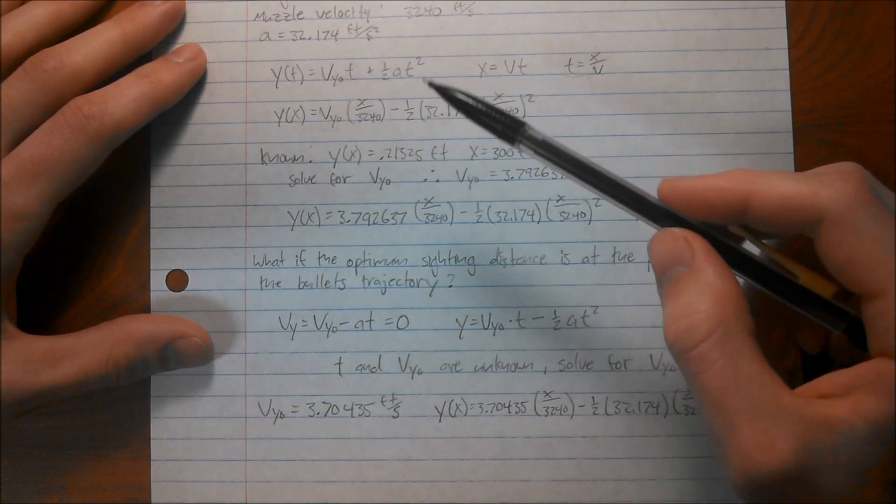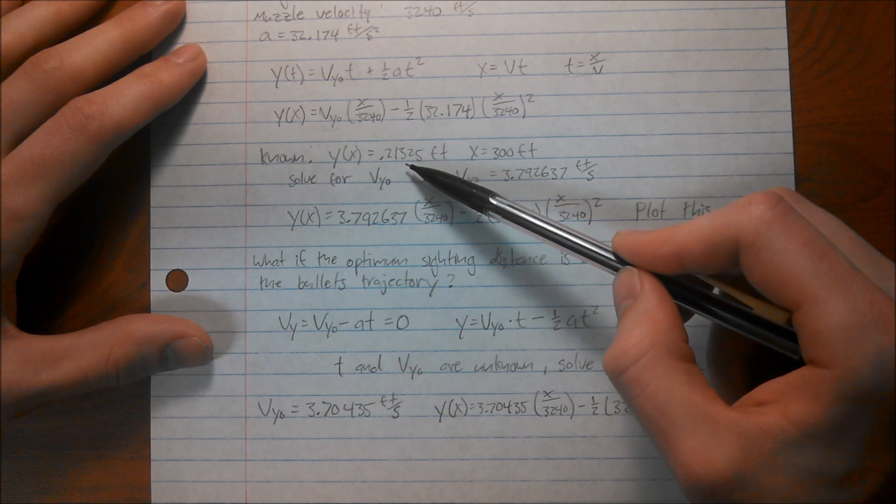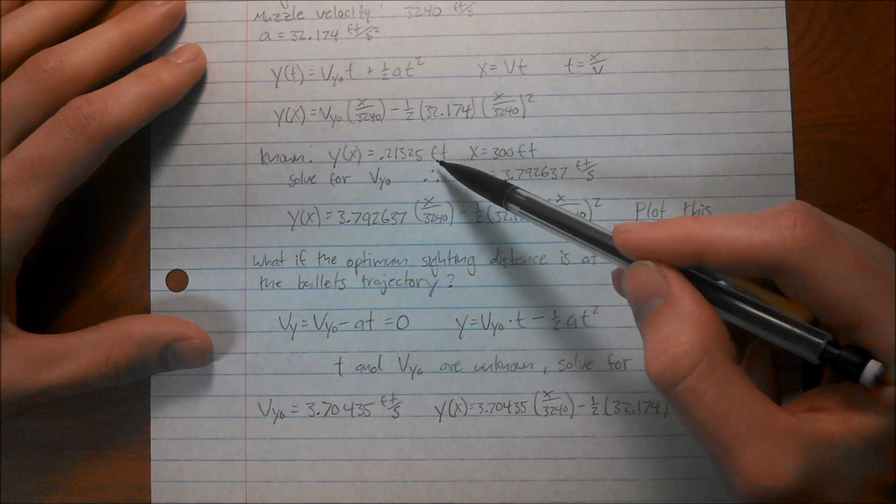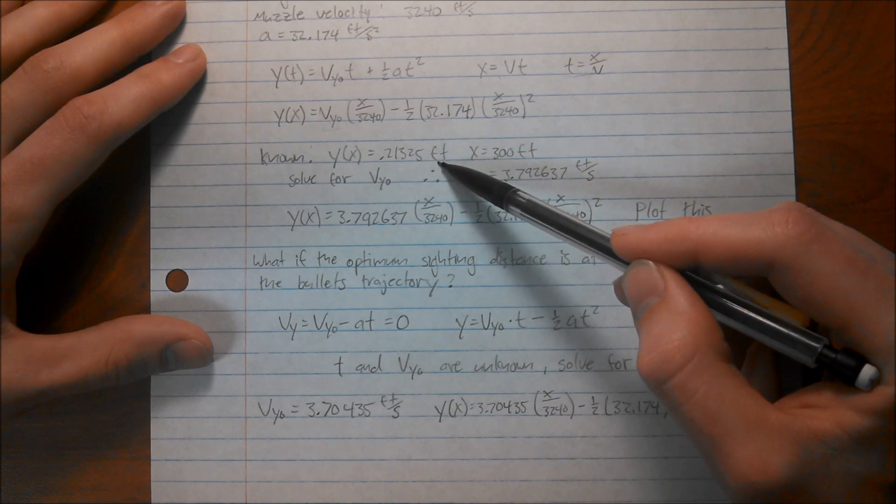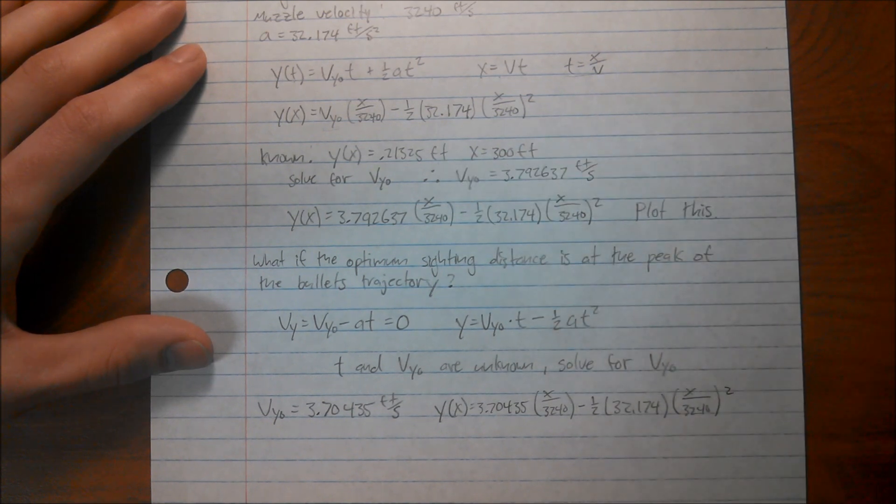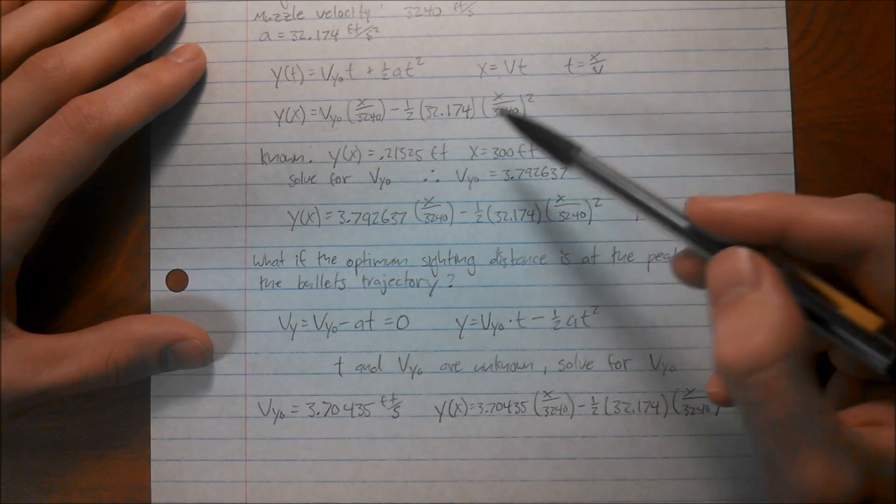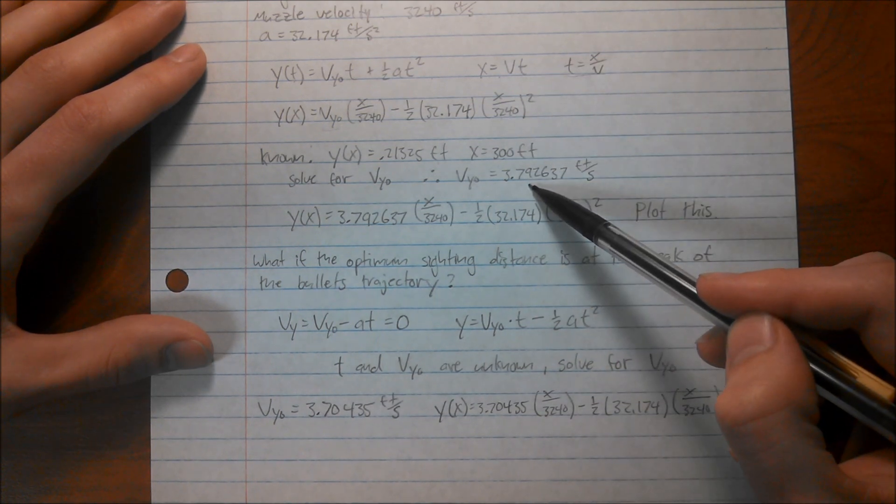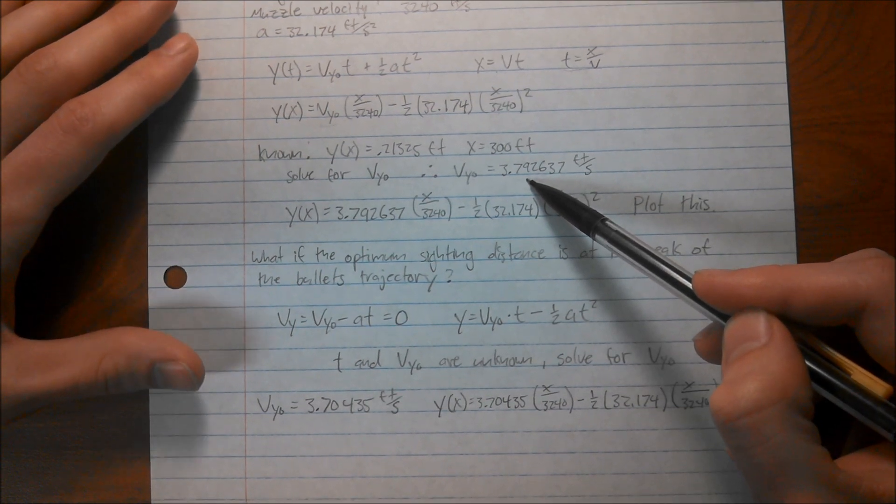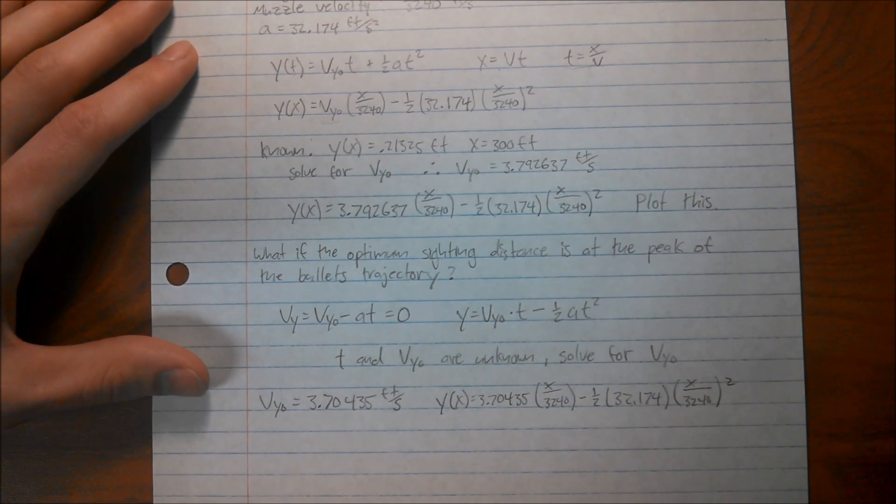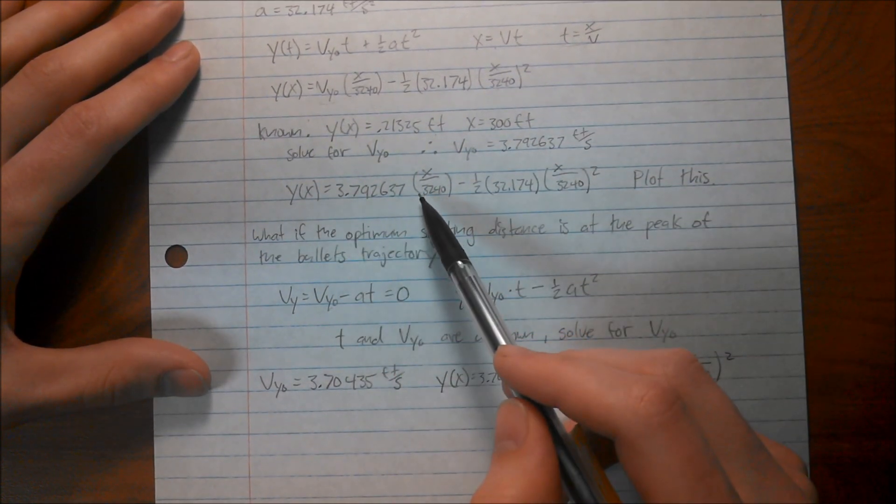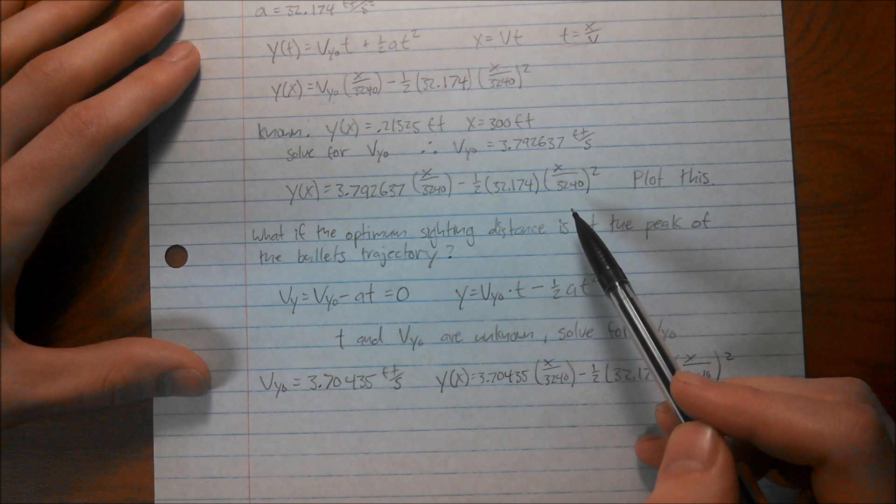And since we know that the sight line is 0.21325 feet above the bore, and we want the bullet to go through this height, we want the bullet to be this high above its initial point, 300 feet out, which is 100 yards, we can solve this equation for the initial velocity, which is 3.792637 feet per second. And this allows us to write out this equation, y of x with respect to x, and we can plot this, which I did in Excel.